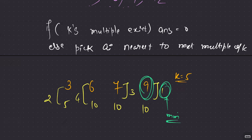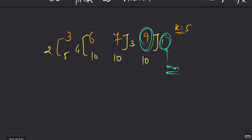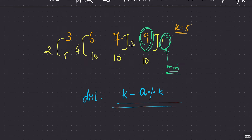That's the logic. If k's multiple exists, answer is 0. Otherwise, pick ai nearest to the next multiple of k and that distance is your answer. To find the distance from element a to the next multiple of k, the formula is k minus (a mod k). This gives the distance to the nearest next multiple of k.